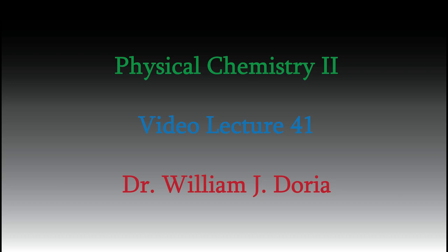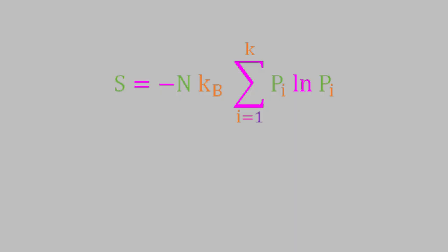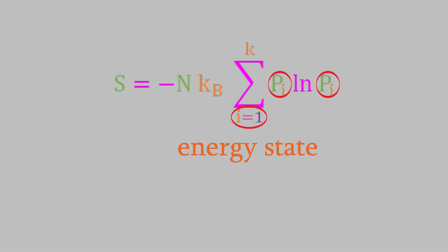Hi, and welcome again to my series of videos for Physical Chemistry 2. In the last video, we looked at the entropy and how our definition of entropy can be adapted to ensembles containing a large number of molecules. In that video, we derived this equation. As you might recall, the subscript i indicates the energy state, so p sub i is the probability that a molecule in the ensemble is in the energy state i. But wait, how do we calculate that?